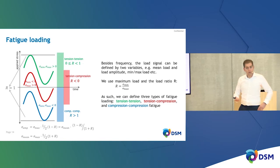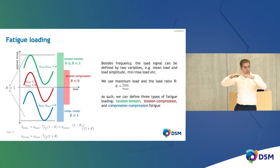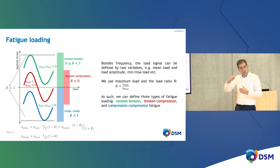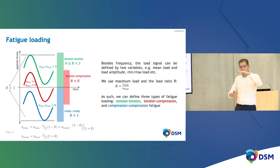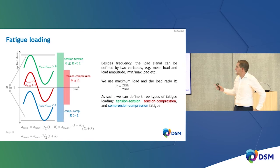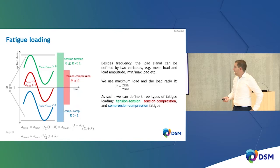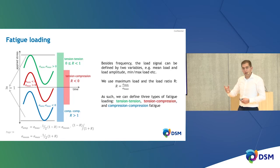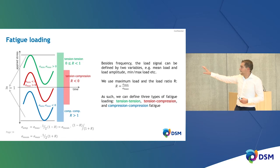As you decrease R below 1, the amplitude increases — for R = 0.1, the minimum stress is only 10% of maximum, so you're oscillating between, say, 100 MPa and 10 MPa. If the minimum load goes into compression, R becomes negative — this is tension-compression fatigue. If both maximum and minimum are in compression, R becomes greater than 1 — compression-compression fatigue. So this factor defines different loading regions: tension-tension, tension-compression, and compression-compression, and its magnitude indicates the oscillation amplitude.